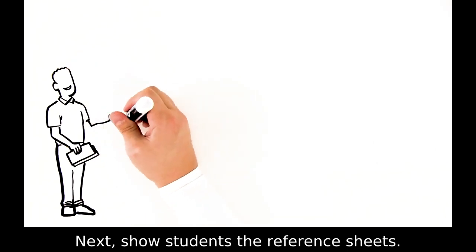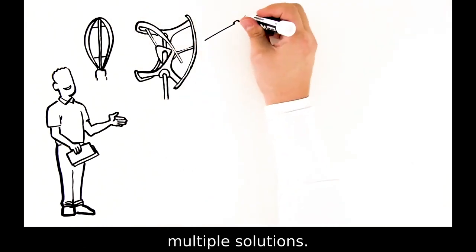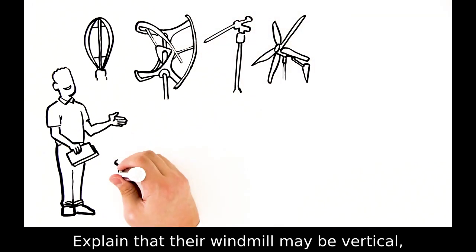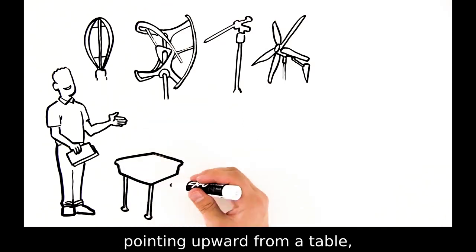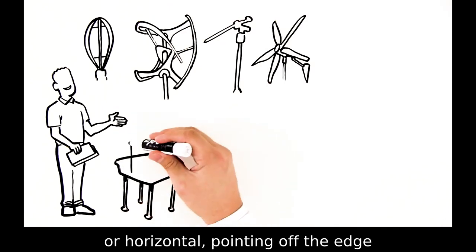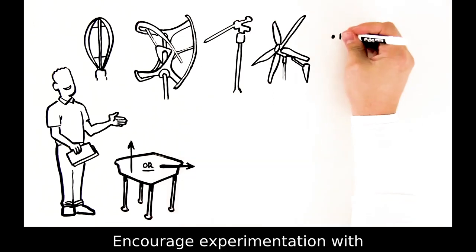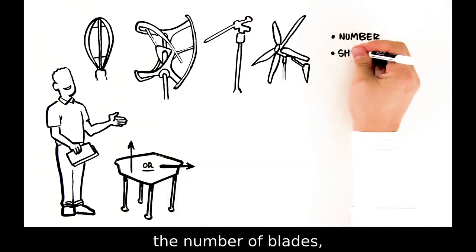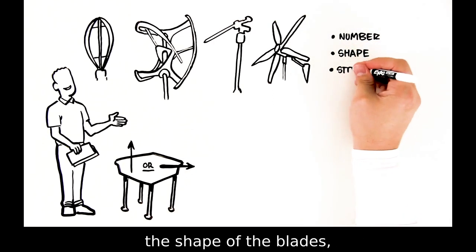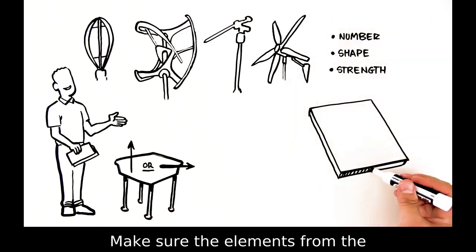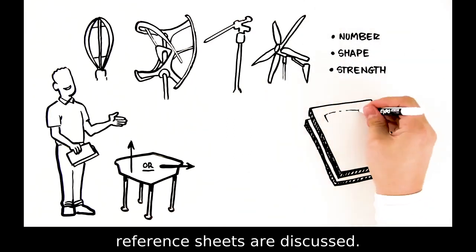Show students the reference sheets and remind them that there are multiple solutions. Explain that their windmill may be vertical, pointing upward from a table, or horizontal, pointing off the edge of a table. Encourage experimentation with the number of blades, the shape of the blades, and the strength of each blade. Make sure the elements from the reference sheets are discussed.